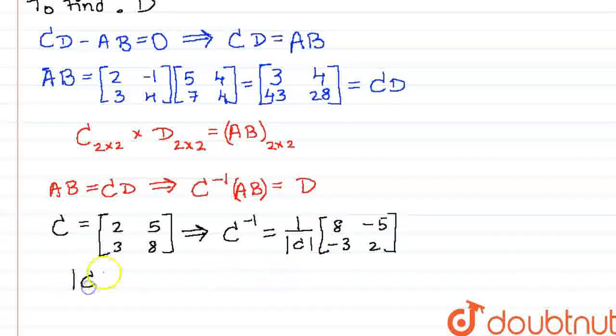The determinant of C is equal to 16 minus 15, which is 1. That will leave C inverse as the matrix 8, negative 5, negative 3, 2.